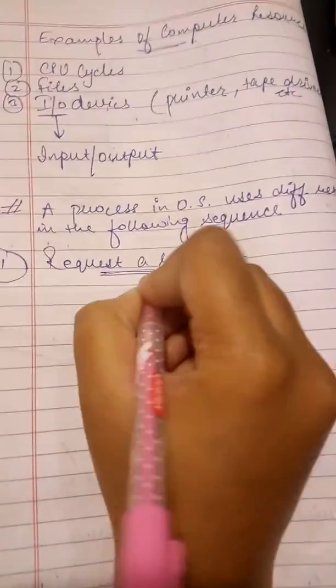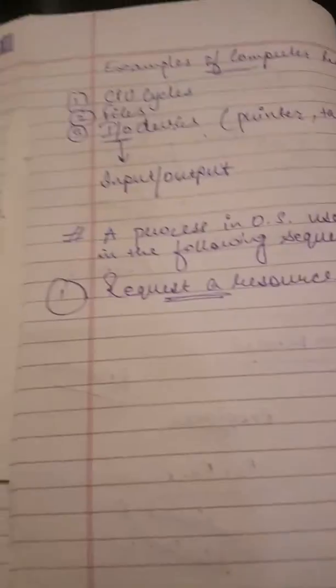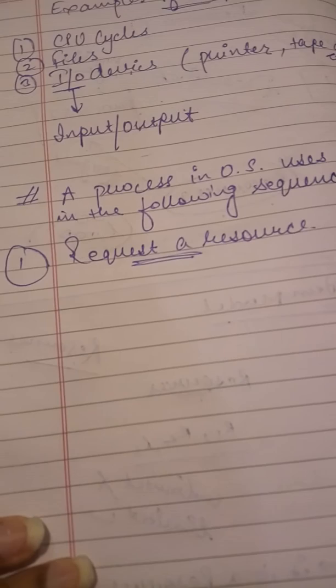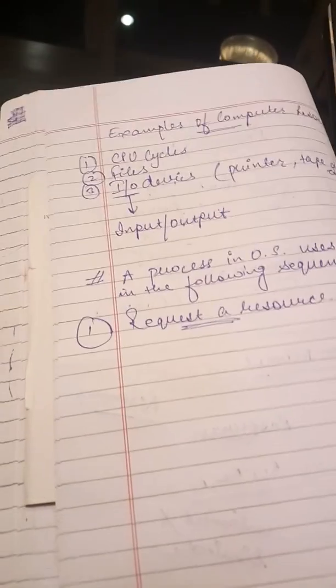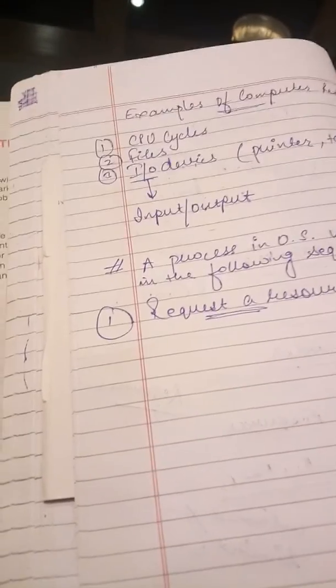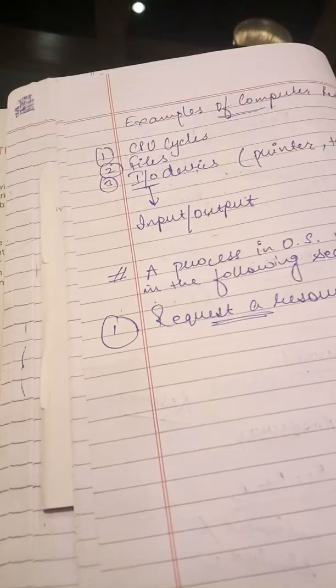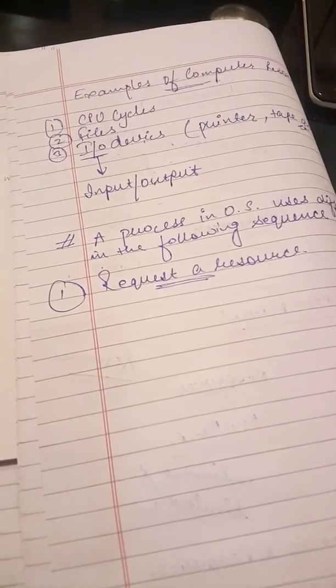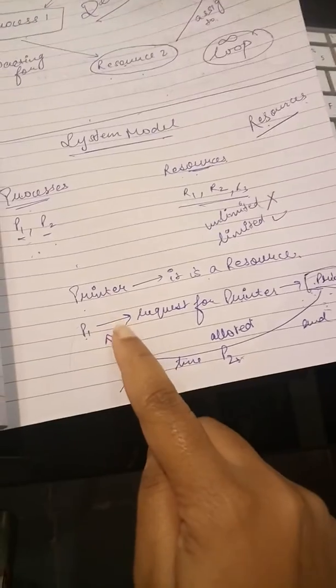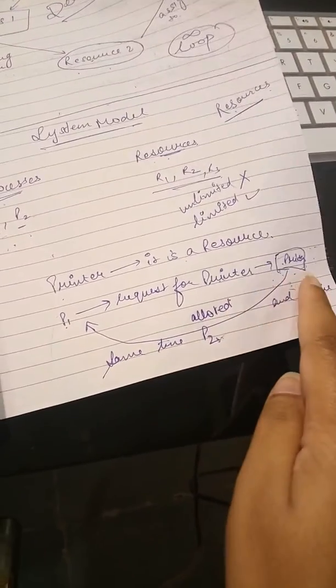So whenever a process needs a resource the first step is to request a resource. If resource cannot be granted immediately then the requesting process must wait until it can acquire the resource. Exactly. So what we are saying here is that whenever a process needs a resource first of all it is gonna request for it. And if that resource is free at that time it is allotted to the process.